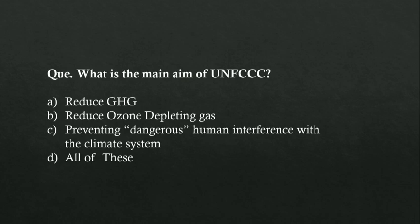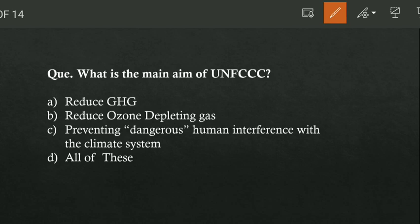What is the main aim of UNFCCC? Option A is reduce greenhouse gases, option B is reduce ozone depleting gas, option C is preventing dangerous human interference with the climate system, option D is all of these. Comment your answer for this question. Give your feedback for this video. Thank you.